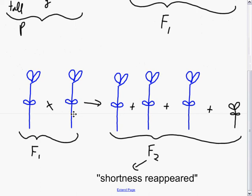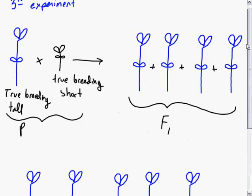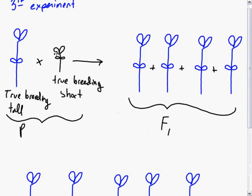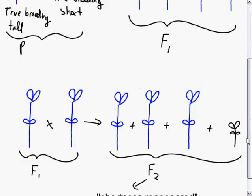I will define some of these terms in a moment. Going on with that experiment, if you took those offspring, those F1 offspring, and you mated them together, brothers with sisters, the shortness would reappear.